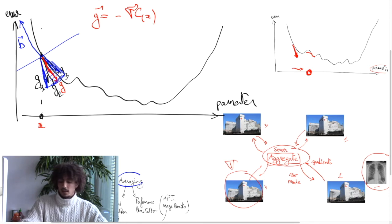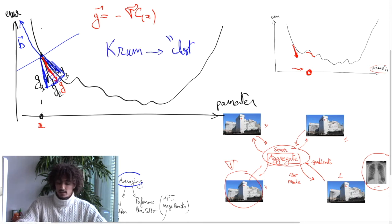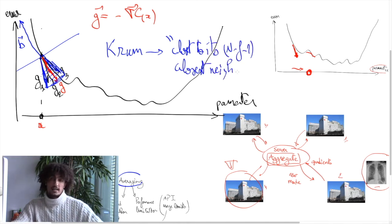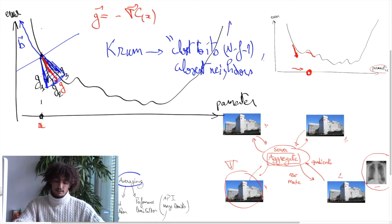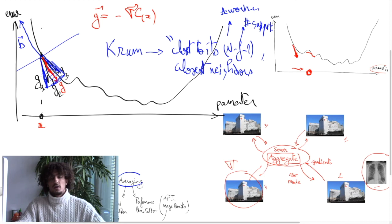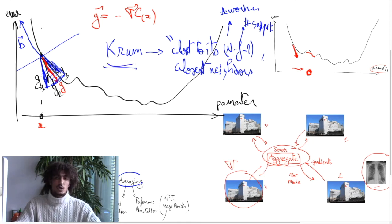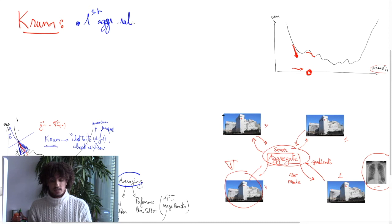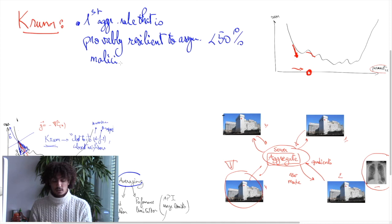And we define our solution Krum as the vector that is the closest possible to its n minus f minus 1 closest neighbors, where n is the total number of workers and f is the number of suspected ones. For example, suspected ones would be the number of smartphones that didn't download the last security update. So our solution Krum, that we explain in more details in the paper, is to our knowledge the first aggregation rule that is provably resilient to asymptotically half-malicious machines.